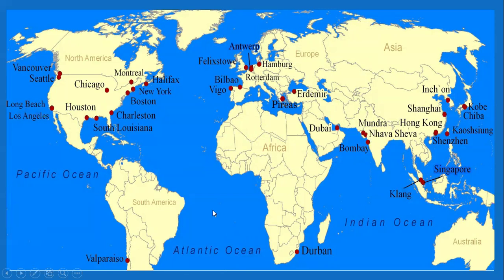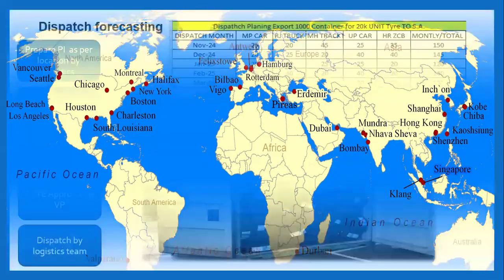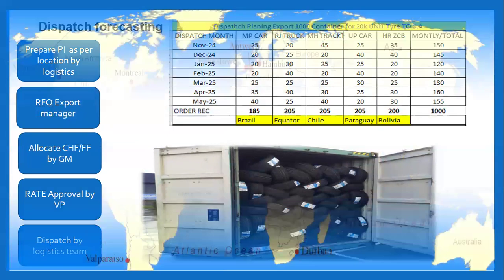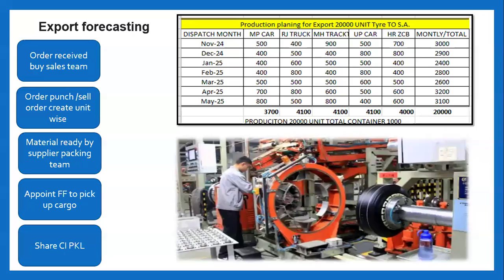The logistics team shares factory-to-destination routes — like Rajasthan to Bolivia, Rajasthan to Paraguay, Maharashtra to Brazil — and asks for rates. These different requirements are sent as an RFQ (Request for Quotation) to different freight forwarders. The rates received from the different freight forwarders are then compared, and whoever is providing the best pricing and best service level will be appointed as the freight forwarder, after management approval.